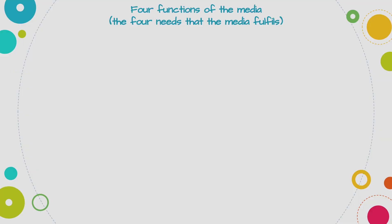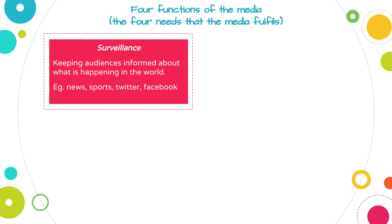When we talk about uses and gratifications, Laswell said the media has four different uses and audiences have needs that must be fulfilled. The first function was surveillance — the idea that audiences need to be informed about what's happening in the world. We can see this in the use of news bulletins, watching sports, checking Twitter or Facebook. We use the media to find out what's happening in the world and keep up to date.